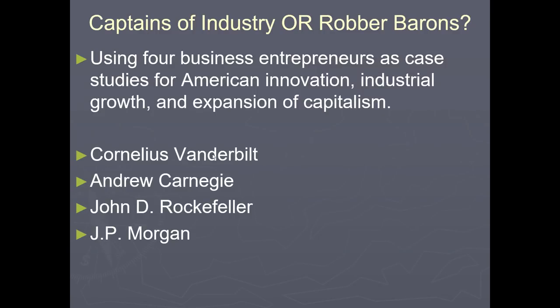This brings us to the new businesses that were formed. Four key entrepreneurs serve as case studies for American innovation. Cornelius Vanderbilt began as a steamship corporation owner and jumped over to railroads. Andrew Carnegie and the steel corporation is a rags-to-riches story. John D. Rockefeller and Standard Oil. And J.P. Morgan in the banking industry, who would later buy the U.S. Steel Corporation from Andrew Carnegie and become the richest man in the world.